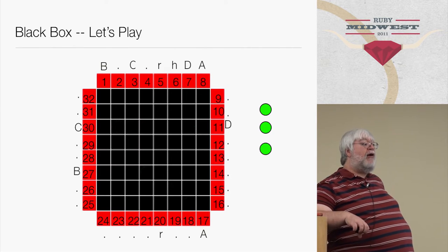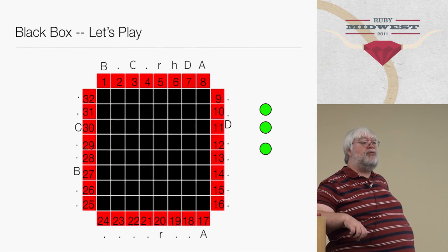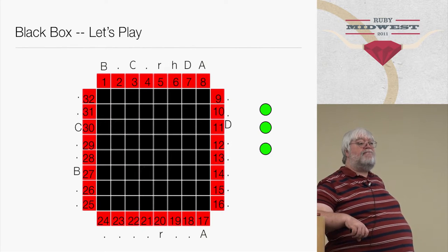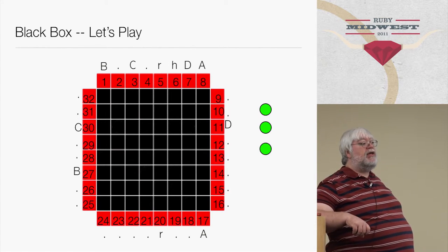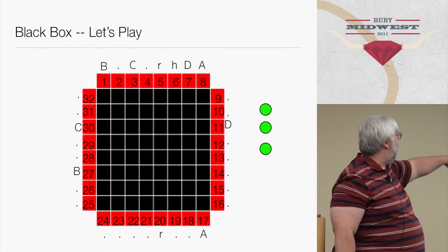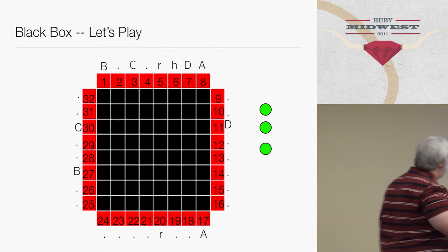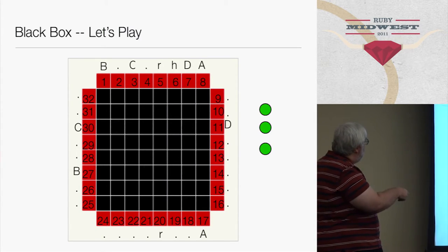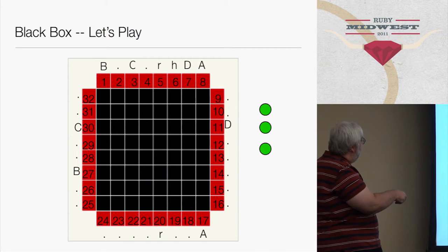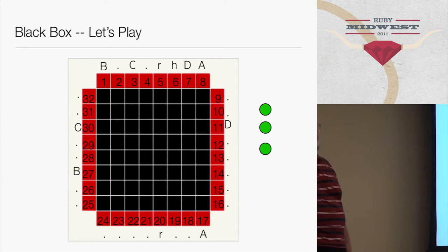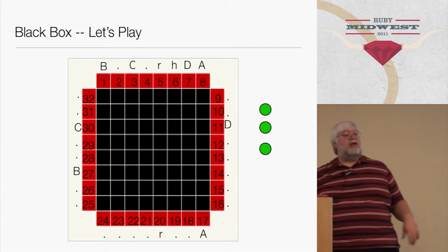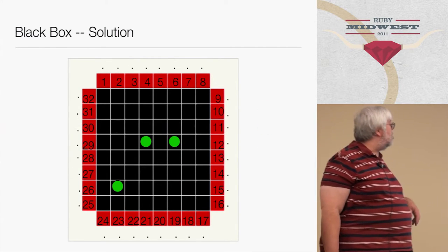Now if I had more than half an hour, we'd actually play this game - I would let you probe and tell you where the signals came out the other side of the black box. Here's a previous game we had played. A went straight through. C, however, did a bouncing thing right there. So maybe there's a little green dot here, or maybe there's one of those complex paths. You've got to keep probing the black box until you find the solution.